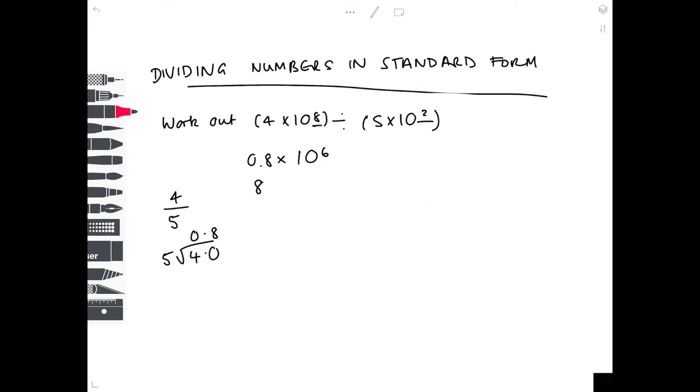So we're going to move that decimal point to become 8. And therefore, we have to do times 10 to the 5 to account for the fact we've made that first number 10 times bigger.